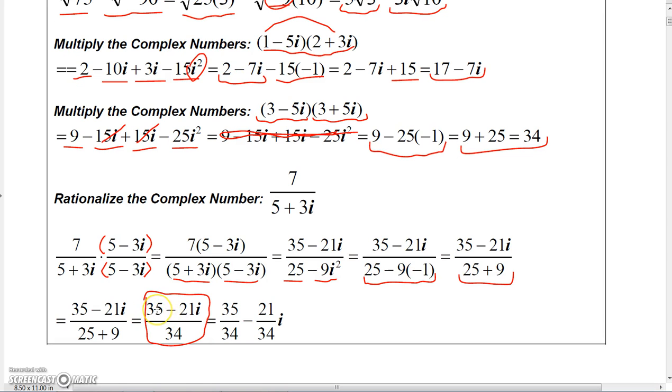...so if he asks you to do that, then you've got to write this as 35/34 - 21/34i as your final answer, and that's how you simplify complex numbers.